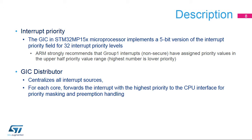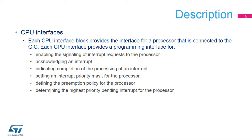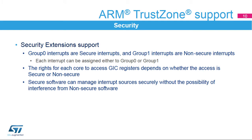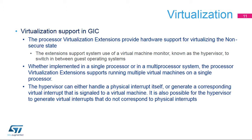Finally, the GIC distributor selects which priority is presented to each core. There is a separate CPU interface for each Cortex-A7 core, which presents either shared or banked registers and either secure or non-secure register view. The Global Interrupt Controller fully supports TrustZone security and allows a flexible implementation of secure and non-secure interrupts. Virtualization is a system supporting more than one operating system at a time or multiple independent instances of the same operating system. The GIC helps support such virtualization, for example by providing virtual interrupts to a virtual machine.